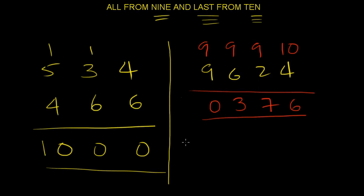And there is your answer. 376. So, complement of 9624. In order to reach 10,000, would be 0376. And, of course, we are not going to write 0.